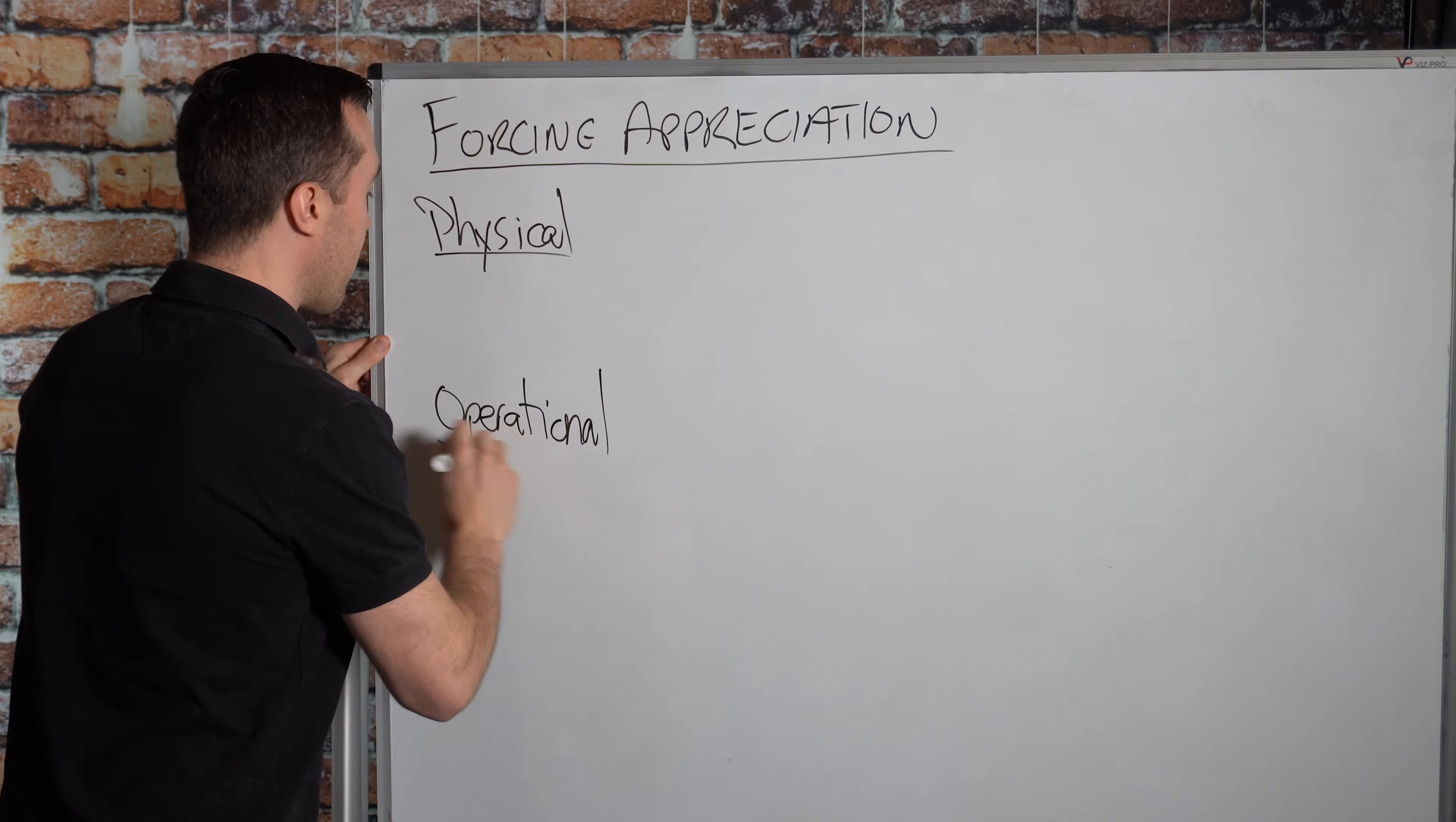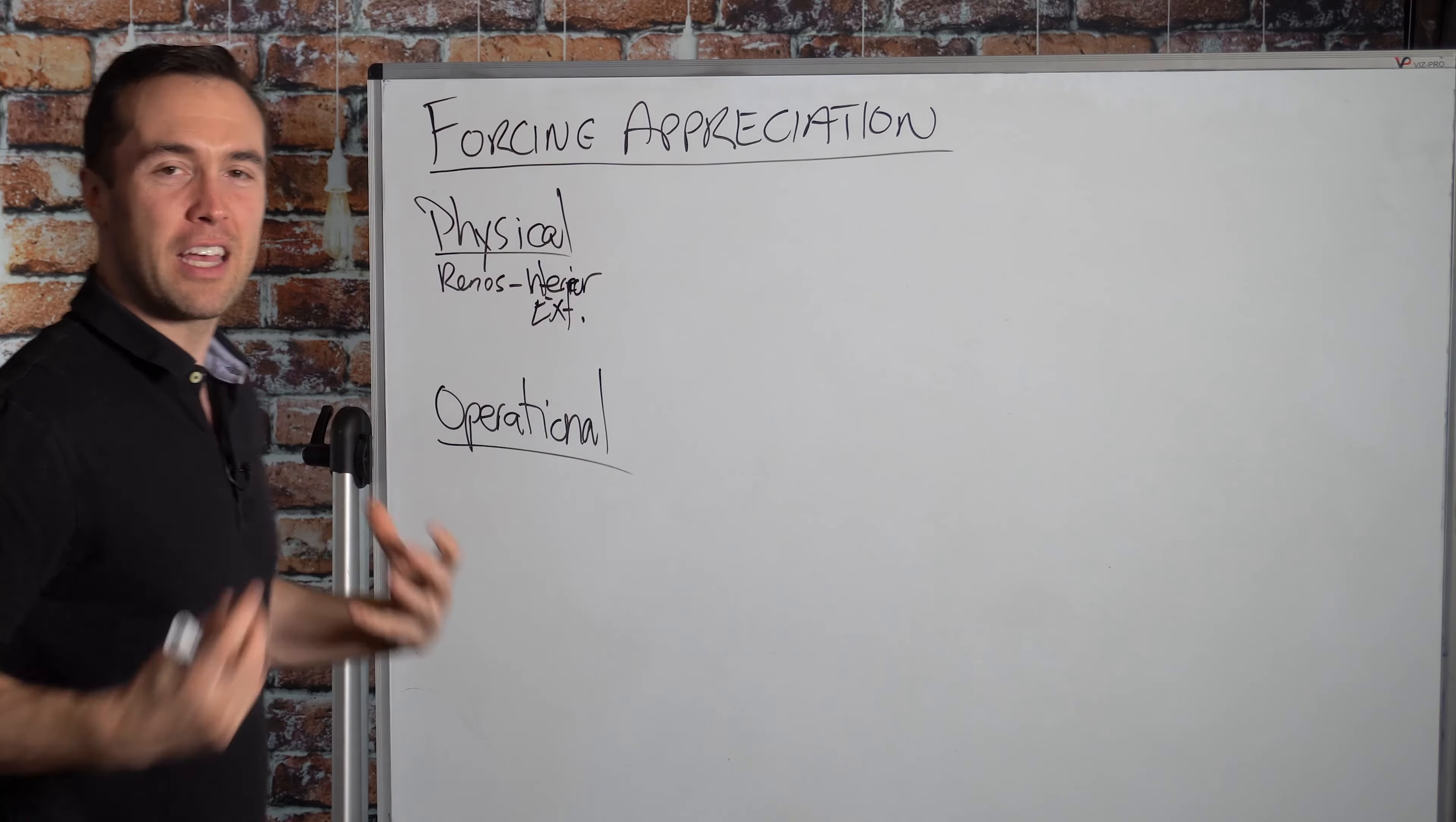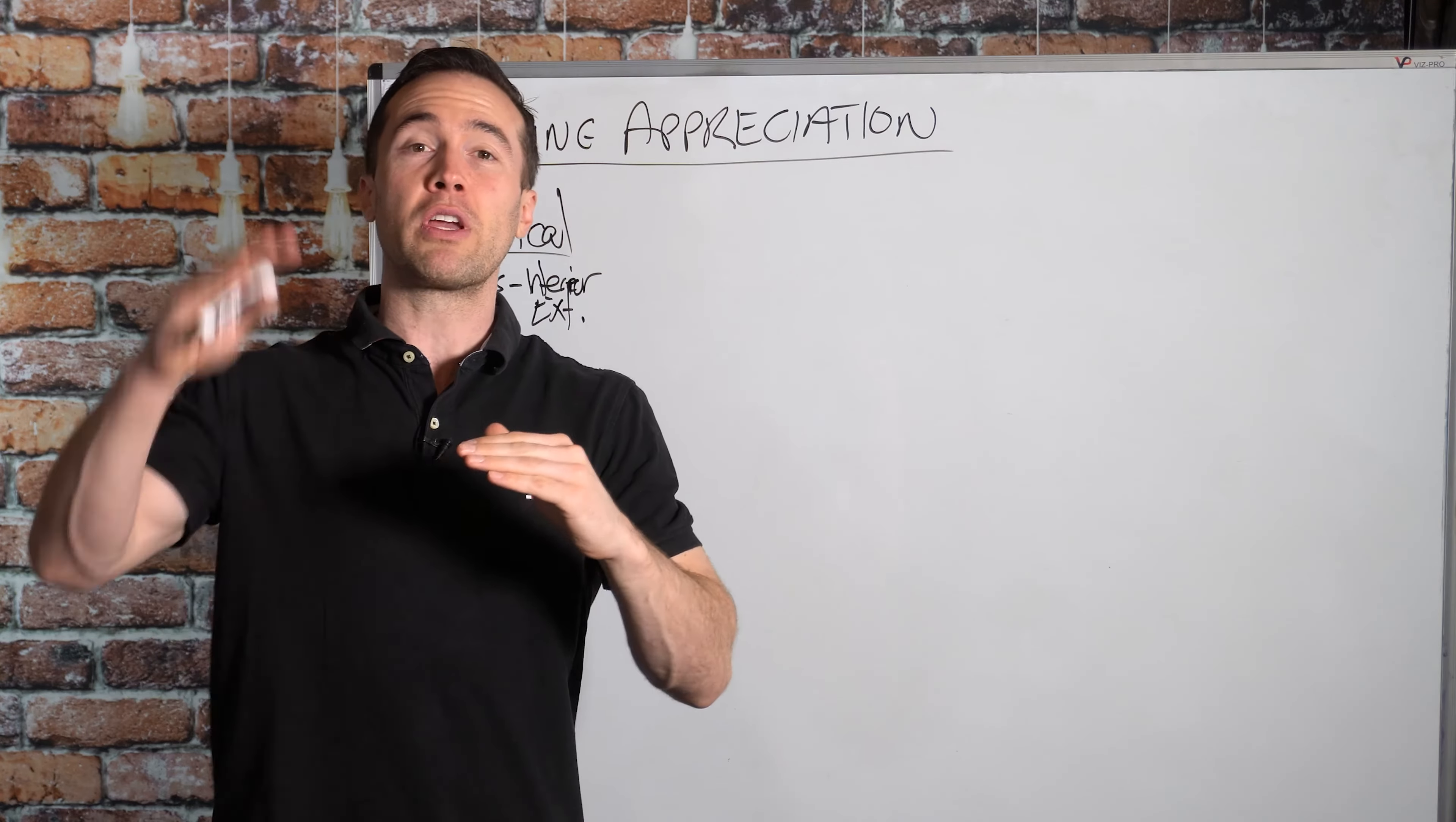So what sort of physical improvements can we do to force the appreciation? Well, there are a whole lot. Number one, we can do renos on the interior and exterior. Now, how do these actually drive income? Because we're putting in CapEx, we're spending money to renovate the property. And you might be thinking, well, we're putting money in, how do we actually get money out? Here's the thing. Once we improve the interior and/or the exterior of the property, we'll be able to raise the rent. The whole idea behind the value add system is finding a property that's operating below market standard and then we can bring it up to market standards.